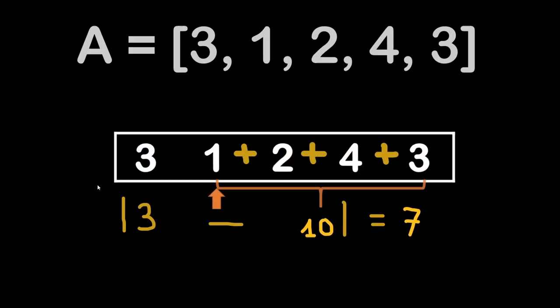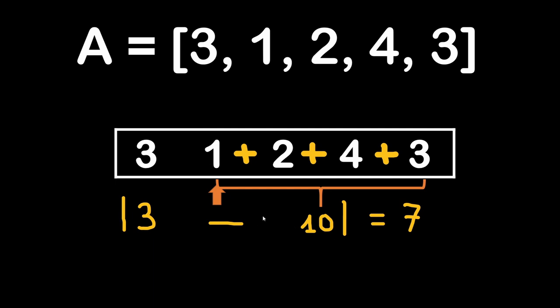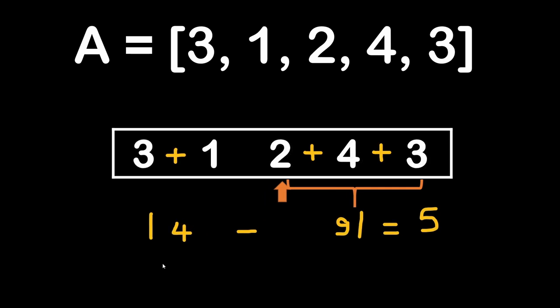For example, if we consider this starting position, we do the sum of all the numbers strictly before 4, so we have 3 in total, and then we do the sum of the rest of the elements, we get 10, and the absolute difference of these two sums is equal to 7. If we move the separating position to the number 2, then we have 3 plus 1 on one side, so we obtain 4, and from the other side 2 plus 4 plus 3, so we get 9, and the absolute difference is equal to 5.